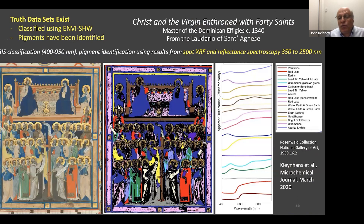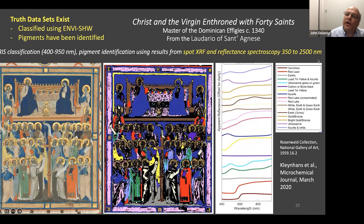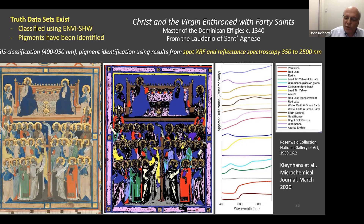Another area is illuminated manuscripts, where we use a VNIR system combined with spot X-ray fluorescence and a point XRF that goes out to 2500 nanometers. Using ENVI tools such as the spectral wizard to find spectral end members, make maps, and then classify using spectral features and other information, we can identify the pigments used. We're now turning the crank on a whole series of illuminated manuscripts to learn more about the working properties of the studio that makes these things.